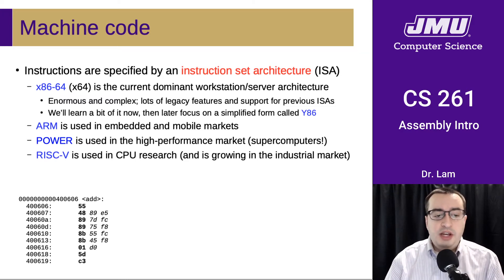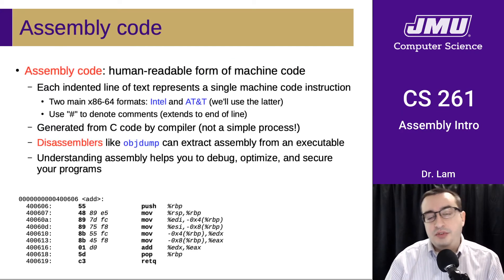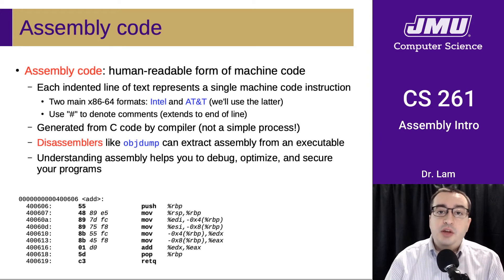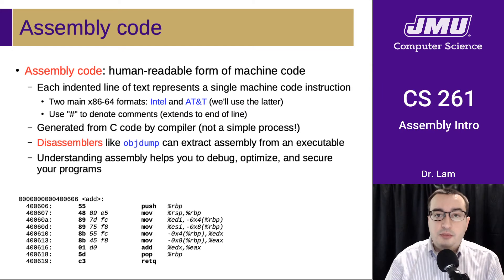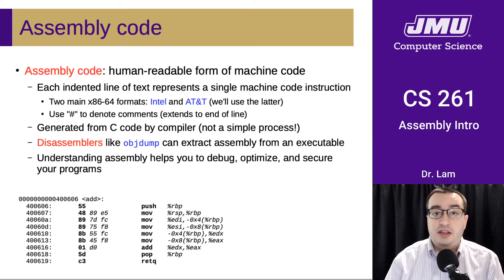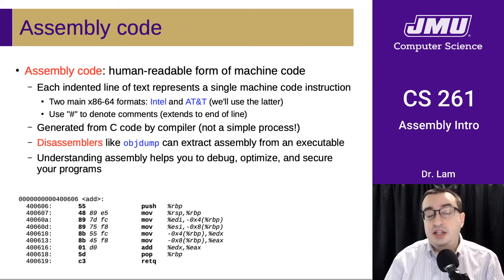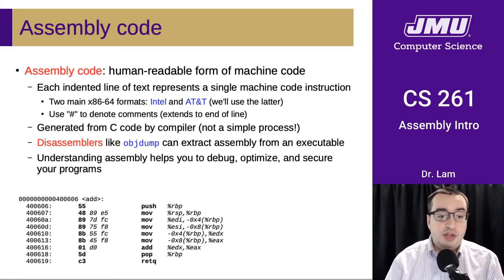The raw bytes of machine code don't really seem to make a lot of sense by themselves, so typically we don't work directly with the raw byte values. Instead, we work with machine code in the form of assembly code. Assembly code is a human-readable form of machine code where every instruction is written as a single line of text. There are a couple of different formats for this; we're going to use what's called AT&T format, because it originally came from a research division of that company.